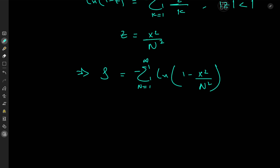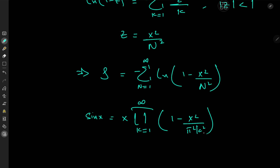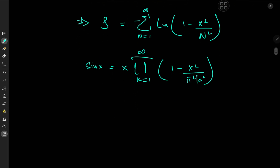We've gone from a sum involving the zeta function to a sum of logarithms — but how are we supposed to evaluate this? We have a beautiful tool at our disposal: the factorization for the sine function. The sine product formula gives sin(x) equal to x times the product over k from 1 to infinity of (1 − x²/(π²k²)). I'd like to replace x by πx.